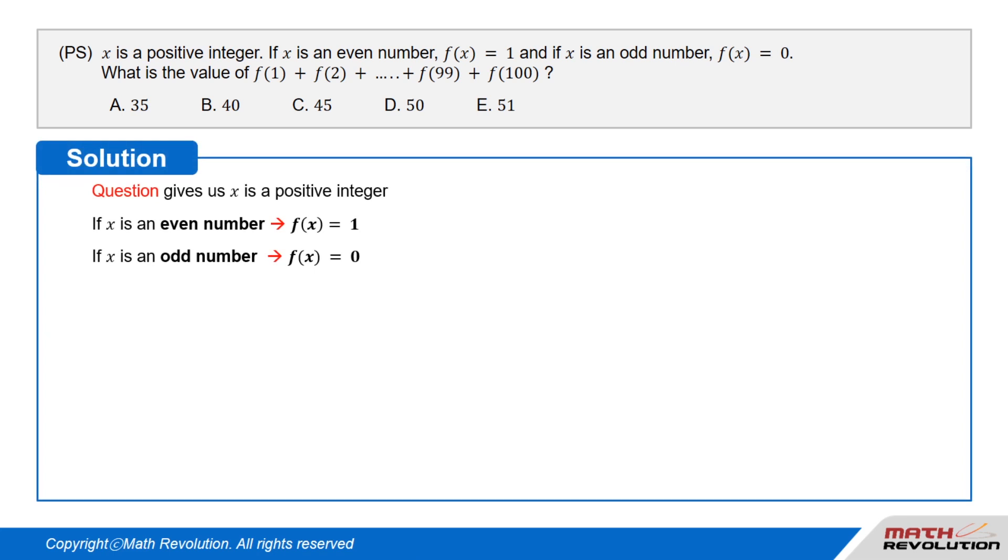Solution. The question gives us that x is a positive integer. If x is an even number, f of x equals 1. And if x is an odd number, f of x equals 0. In other words, f of x is either 1 or 0.